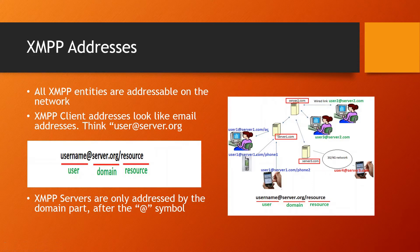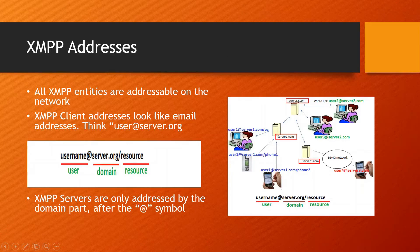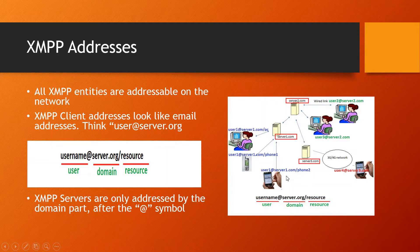All XMPP entities are addressable on the network — that's how we are able to send a message from point one to point two. XMPP client addresses look like emails: username at server. You also see a slash resource. A resource is used to flag the device the user is using to connect to their server. For example, user1 at server1.com on a phone is the same account connecting from multiple devices, and we use the resource part to identify which device the user is using.